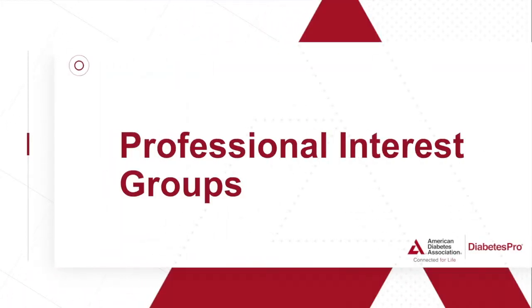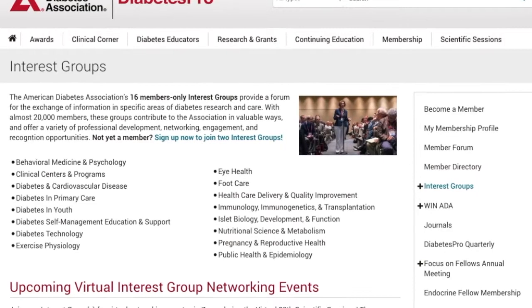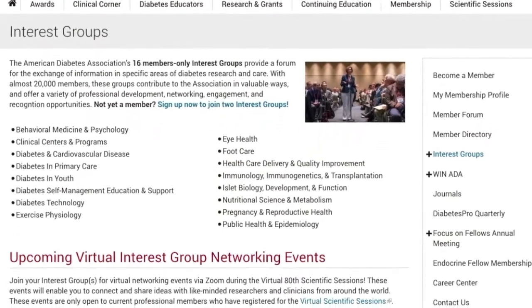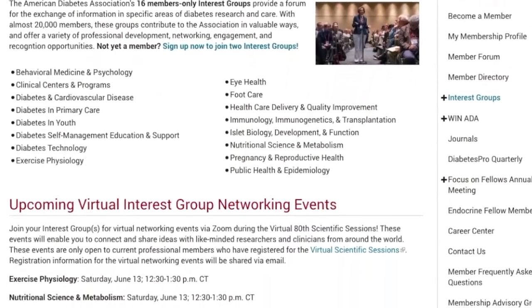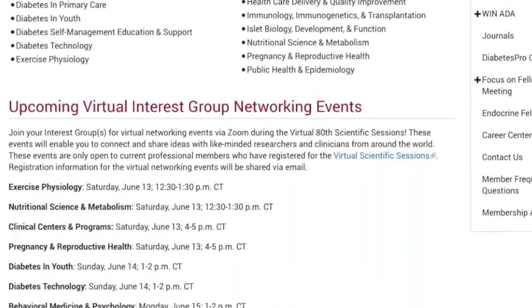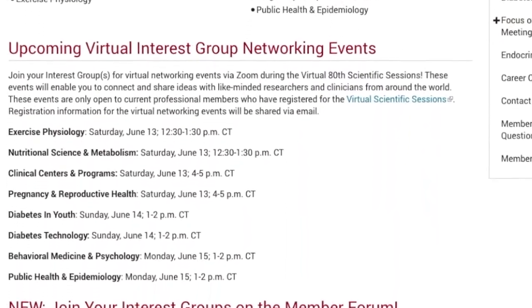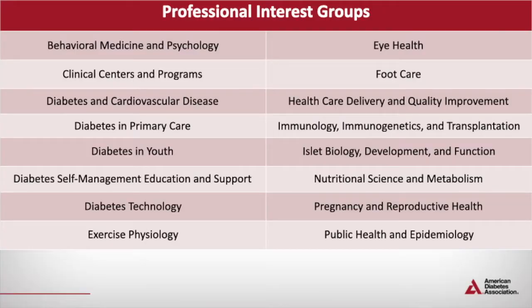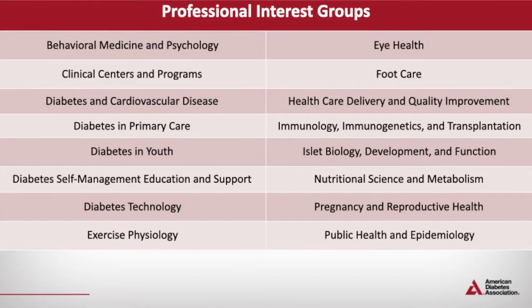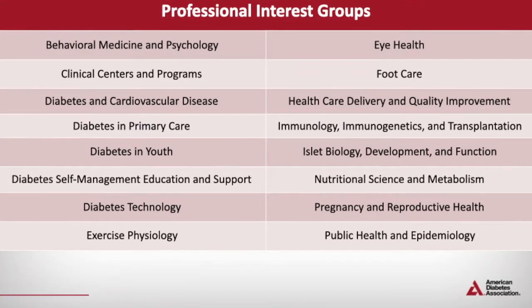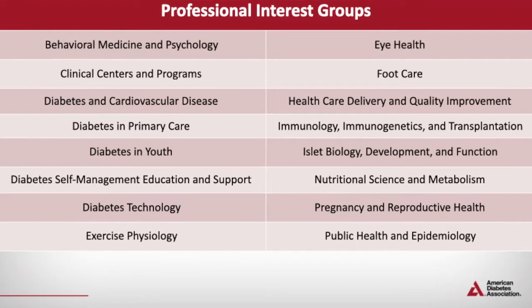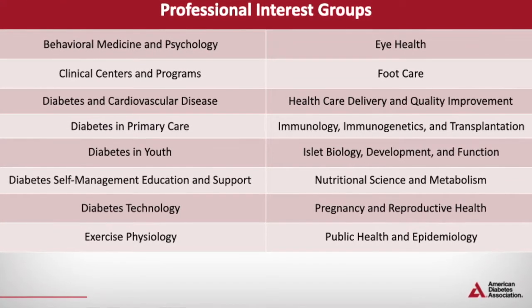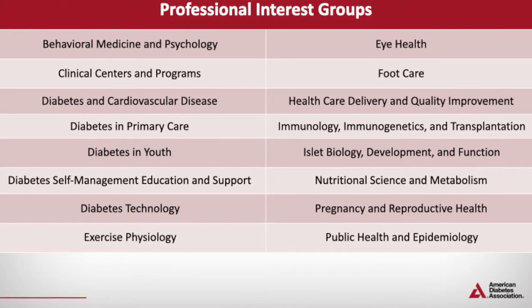The American Diabetes Association's 16 professional interest groups provide a forum for the exchange of information between members who work in specialized areas of research and care. Our current interest groups include diabetes technology, behavioral medicine and psychology, eye health, eye biology, and many more.